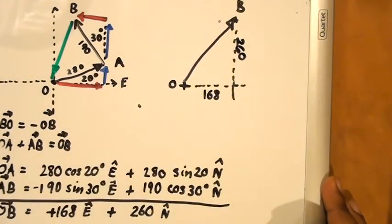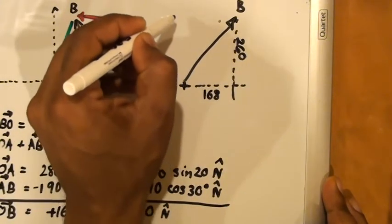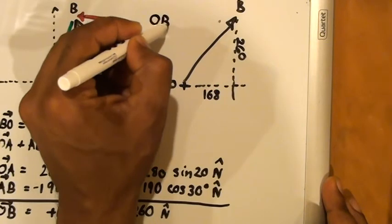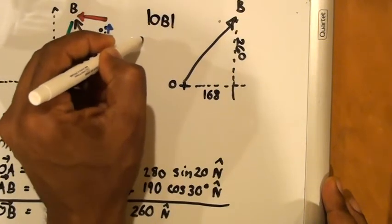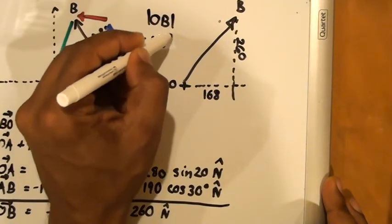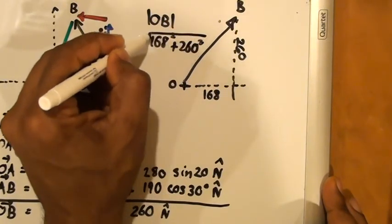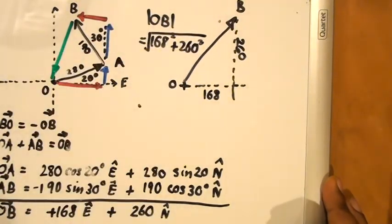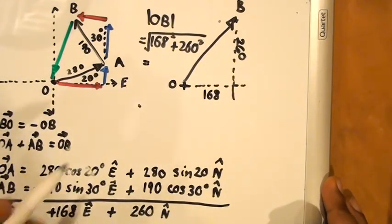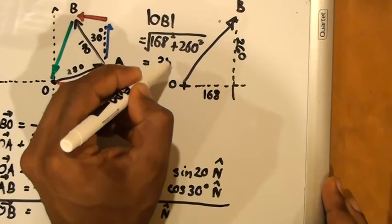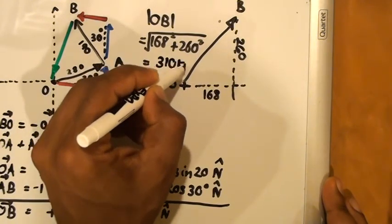We can find the length of the resultant using Pythagoras. We can see that the size of OB is going to equal the square root of 168 squared plus 260 squared, and that will give us a size of 310 kilometers.